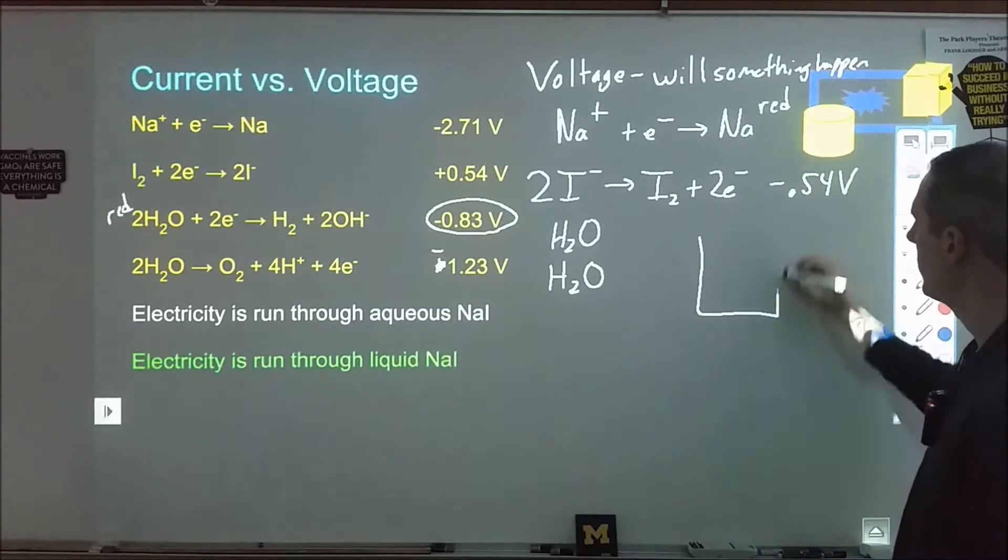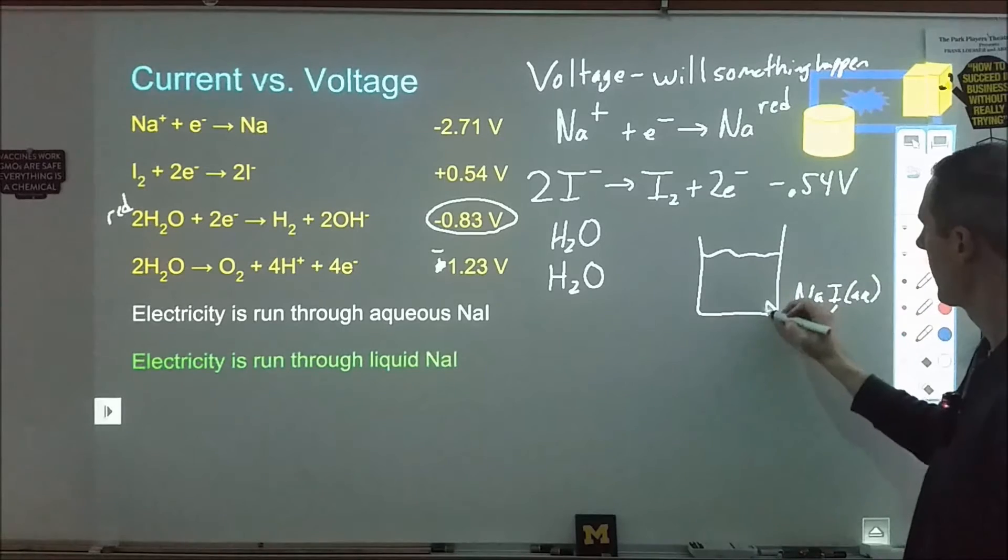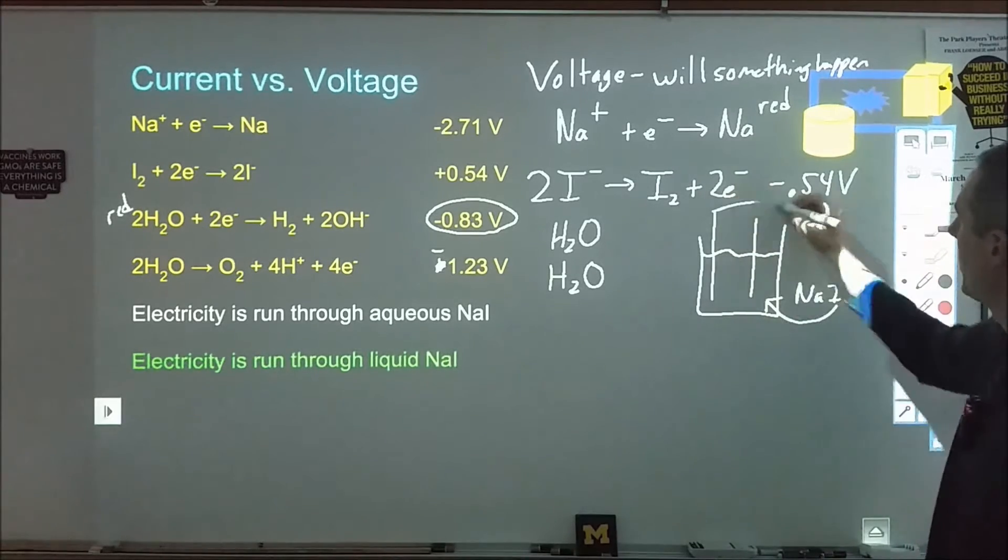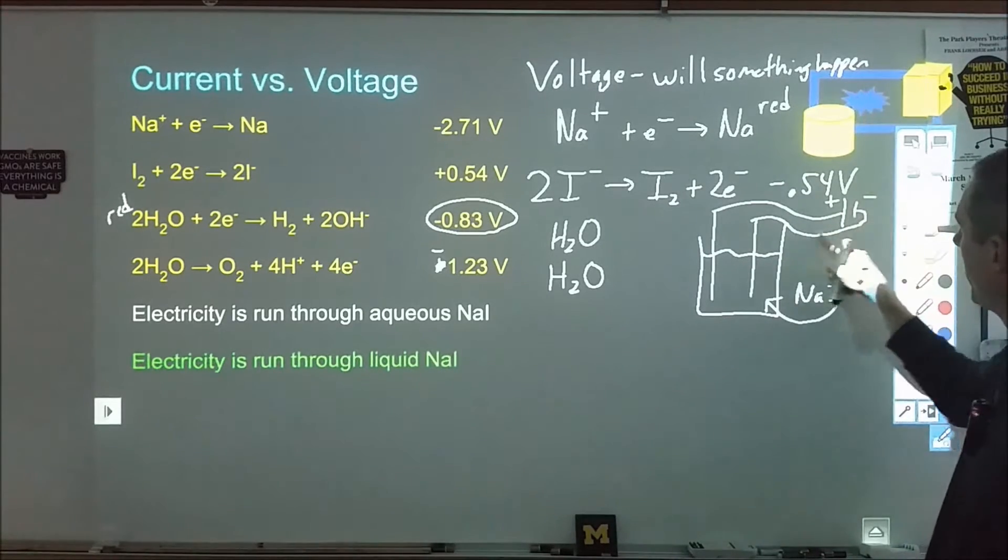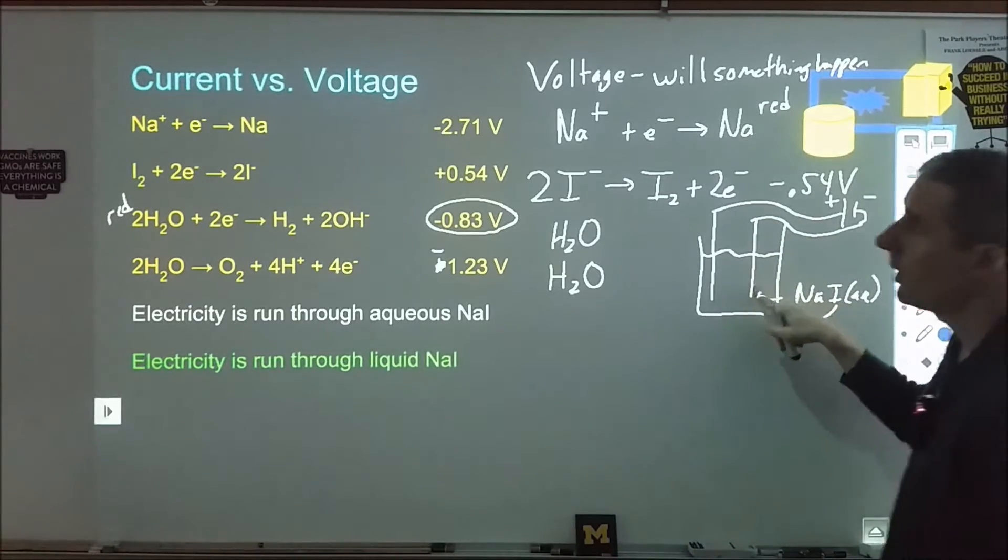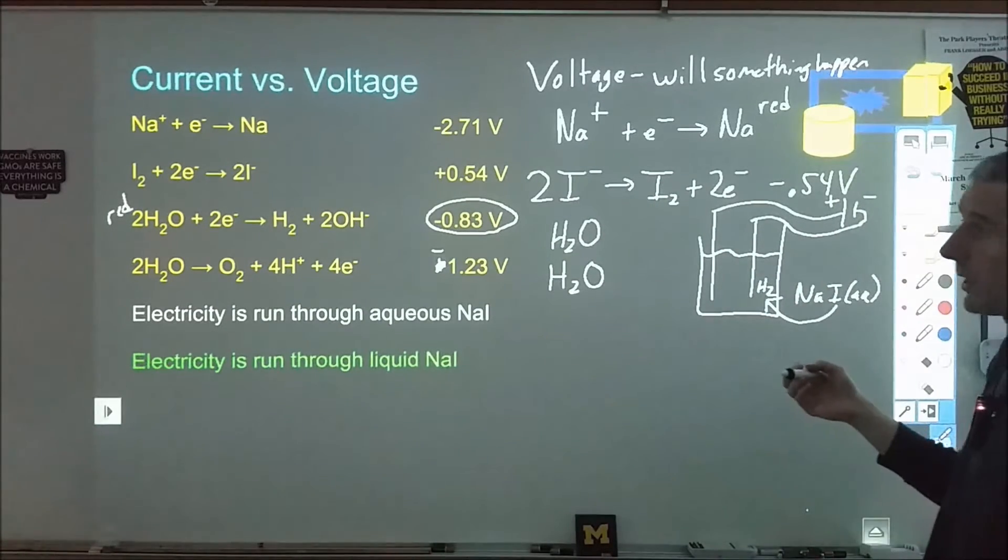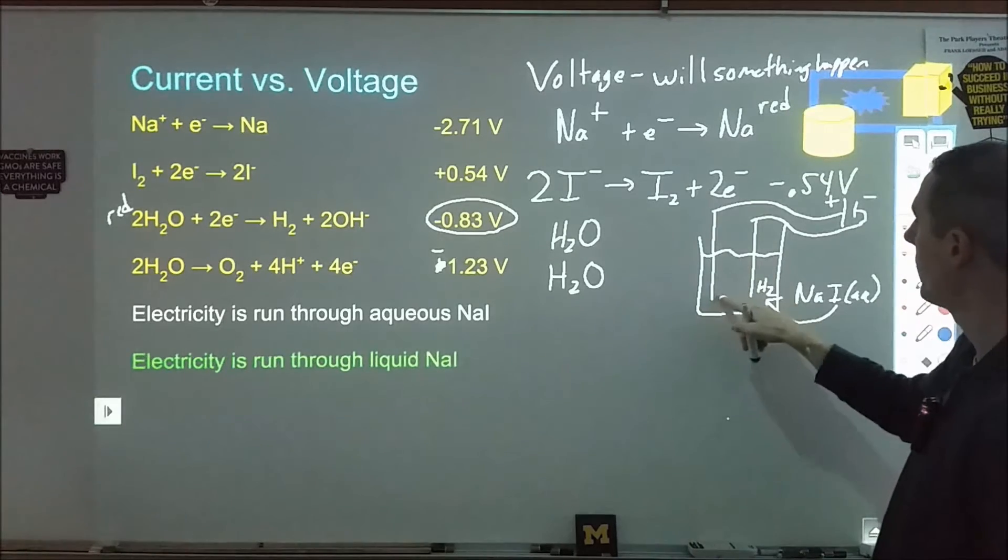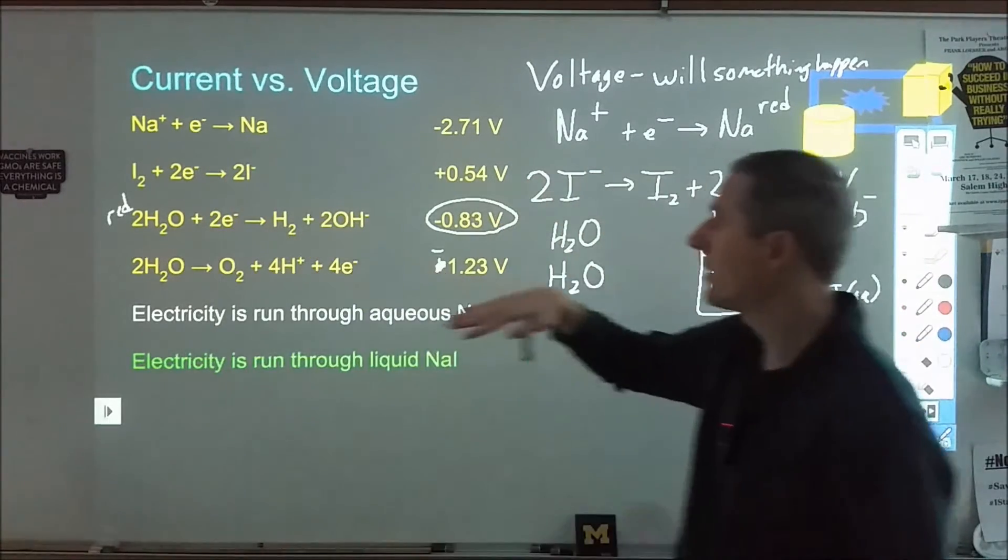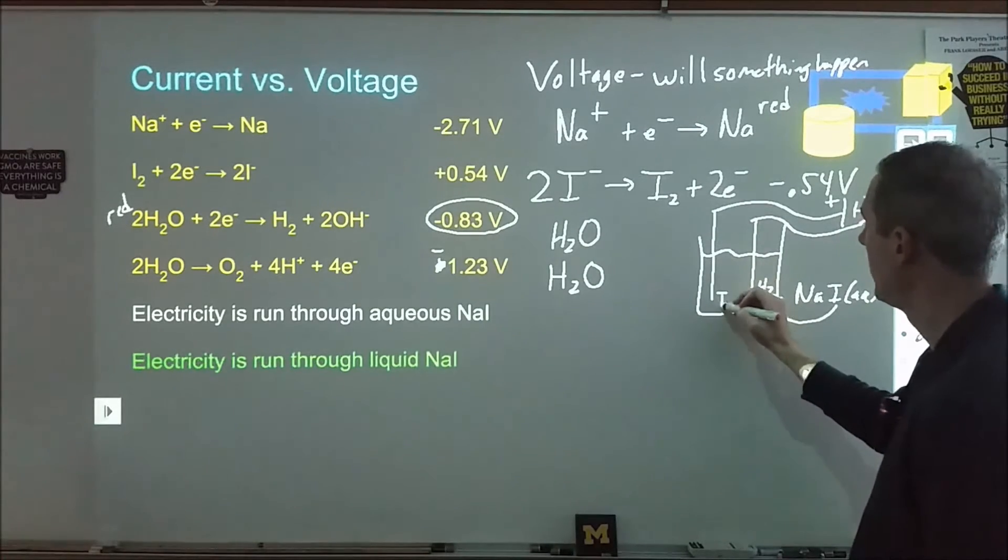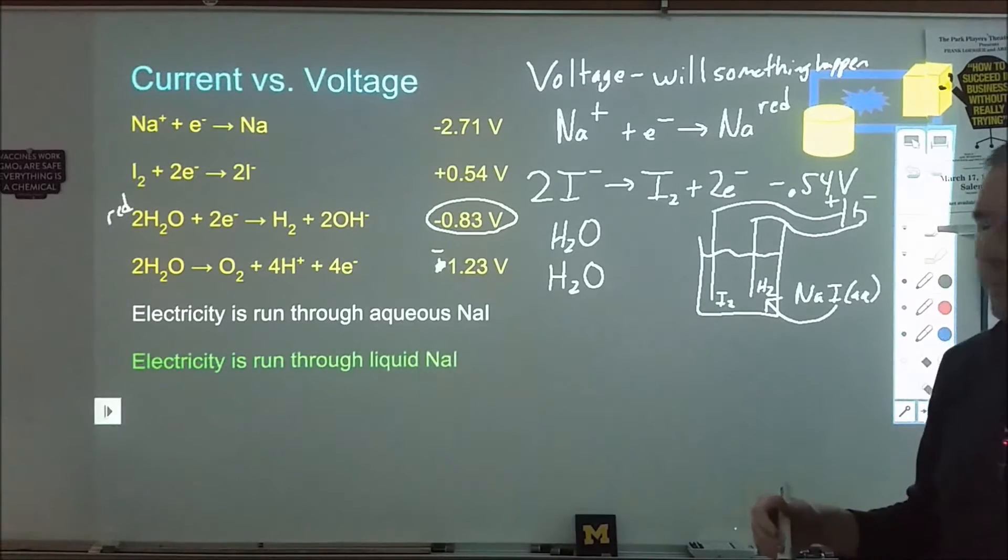When we have this set up where we're running electricity through an aqueous solution of sodium iodide, we hook this up to a battery. Here's our negative terminal, here's our positive terminal. Electrons are going to flow out of here, we're going to have reduction occur here. We're choosing between the sodium ions being reduced or the water being reduced. Here we're going to form hydrogen gas and some hydroxide. At this one, electrons need to come off from the solution somewhere so we continue on the circuit back to the positive electrode. We're looking at iodide reacting or water reacting. In this case, the iodide is going to form iodine. We're going to start to see a brownish, yellowish solution form around that electrode.